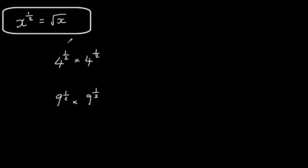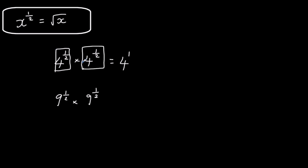A power of a half means square root. In this case we've got four to the power of a half times four to the power of a half. When we multiply powers we add the indices, so half plus half makes a whole. We've got two numbers here that are the same and they multiply to give four — so what two identical numbers multiply to give four? They've got to be two and two. So four to the power of a half must equal two.